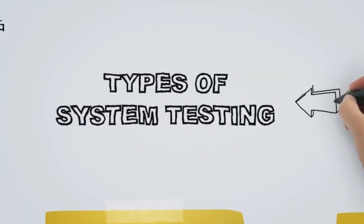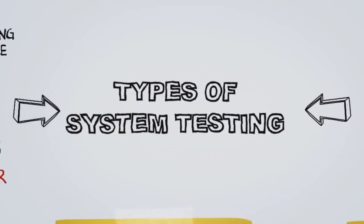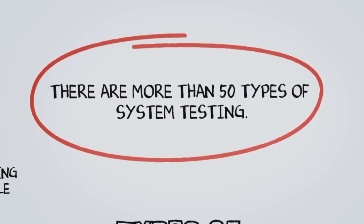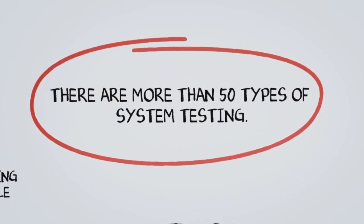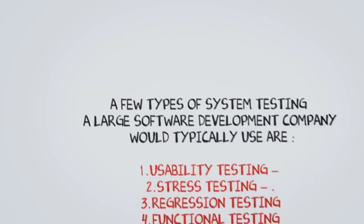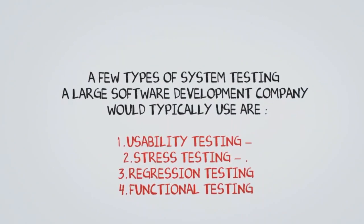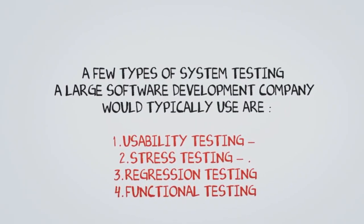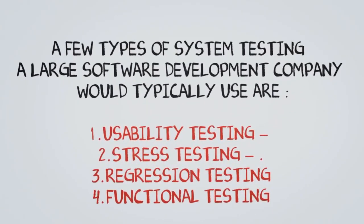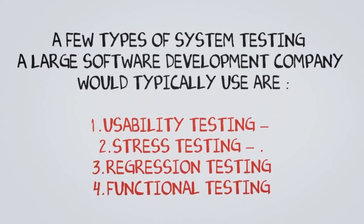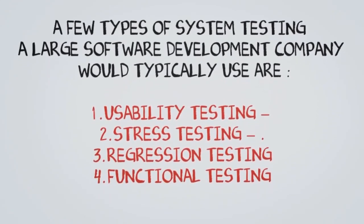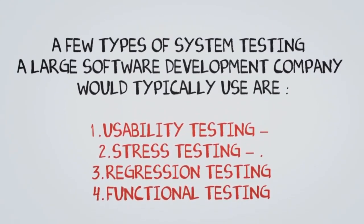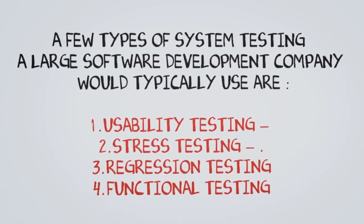Types of system testing: there are more than 50 types of system testing. A few types that a large software development company would typically use are usability testing, stress testing, regression testing, and functional testing.